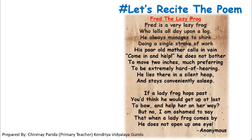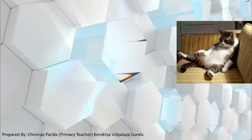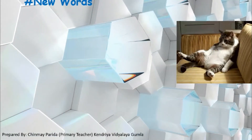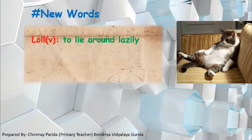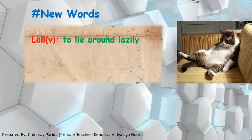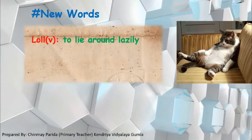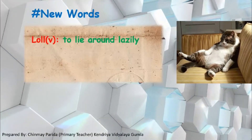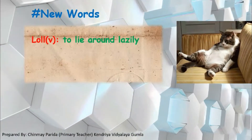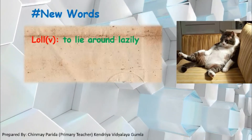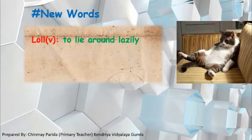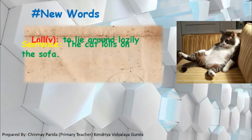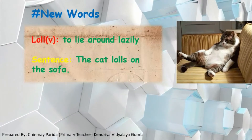Now let's understand the new words in the poem. The first new word is 'loll.' Loll is a verb and it means to lie around lazily. You can see that the cat is lying on the bed lazily — so we can say: 'The cat lolls on the sofa.'